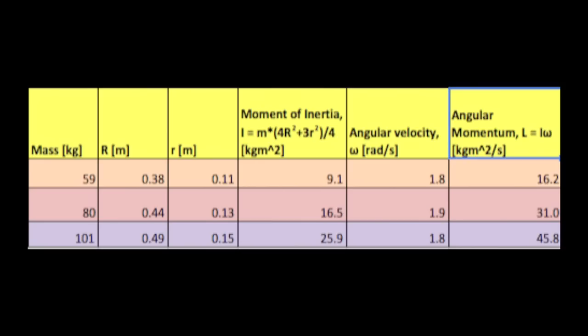Okay, so now I have their masses, their big R, their little r, and their moment of inertia. Again, in an excel sheet, I calculated their angular momentum by simply multiplying their moment of inertia by their angular velocity.